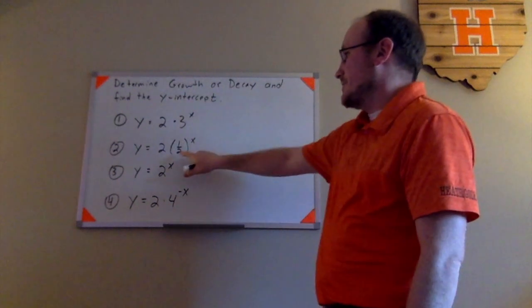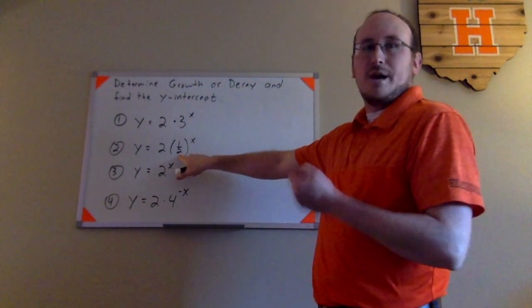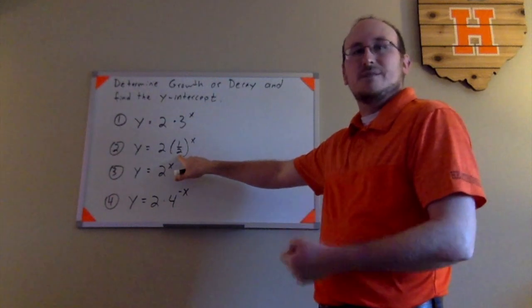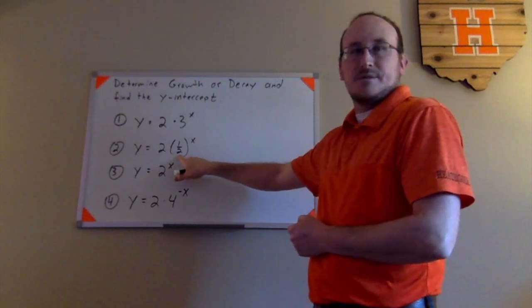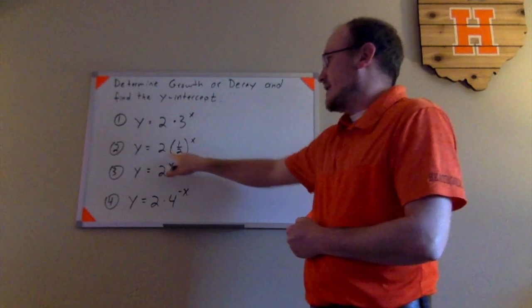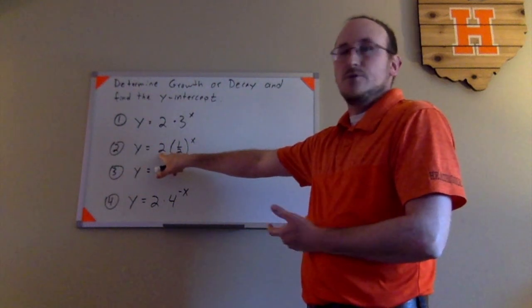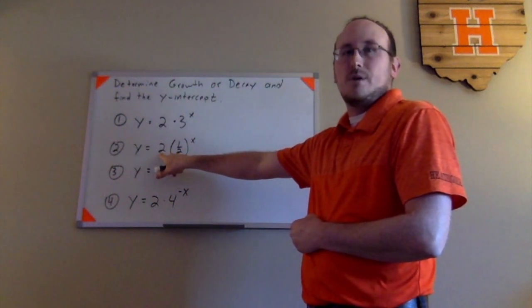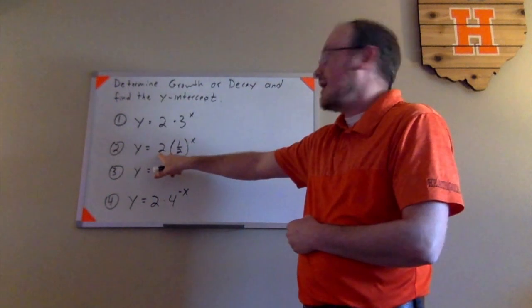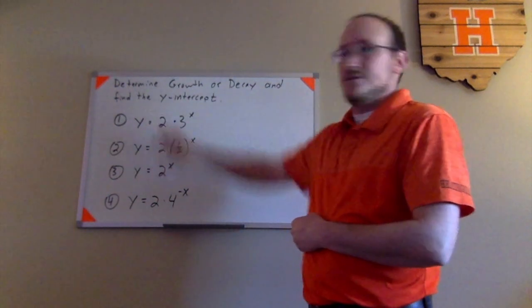Hopefully you were able to determine that because the b value here is 1 half, which is definitely between 0 and 1, that this would represent exponential decay. And then again, this initial value of the 2 here representing the initial value of the y-intercept of the graph. So we should expect to see this graph crossing the y-axis at 2 as well.